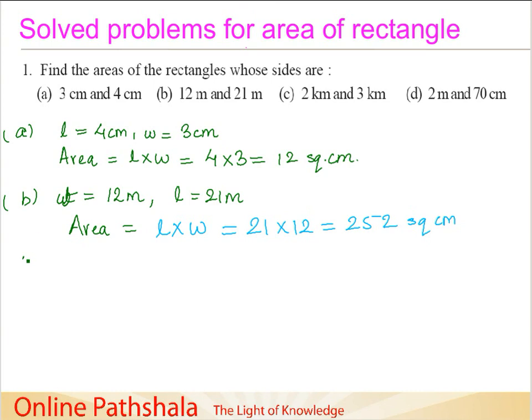We have the third problem in which the length L, the longer side, is 3 kilometers, and the width W is equal to 2 kilometers. The area of this rectangle, which is length into width, or 3 multiplied by 2, is equal to 6 square kilometers.